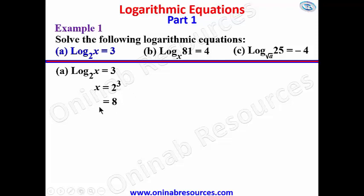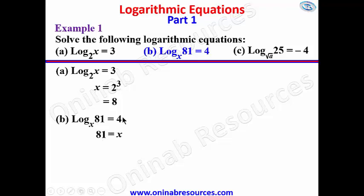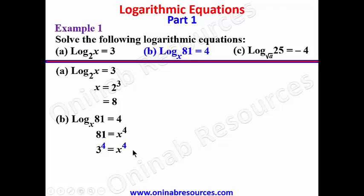For part b, we have log 81 to base x is equal to four. Applying the same law, this gives us 81 equal to x to the power of four. We ask: what number raised to power four gives us 81? That is three. So three raised to power four equals x raised to power four, and since the indices are equal the bases are equal, therefore x equals three.